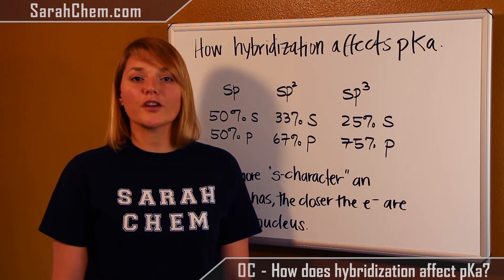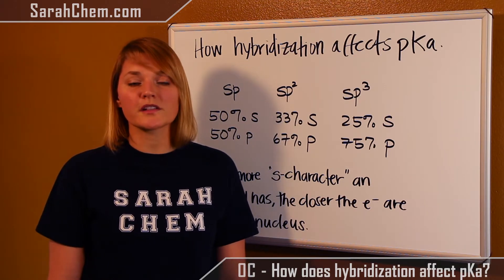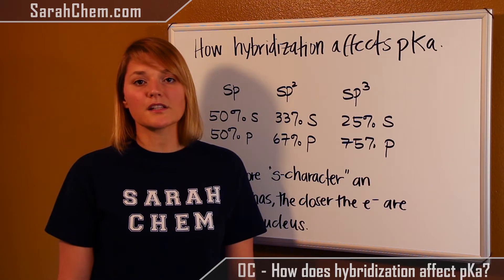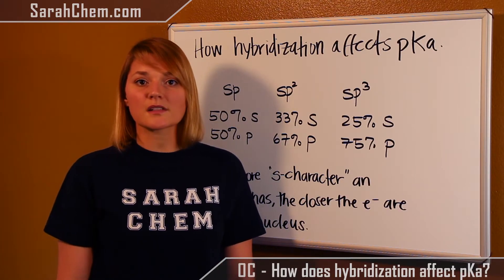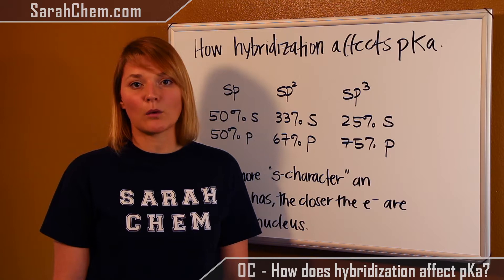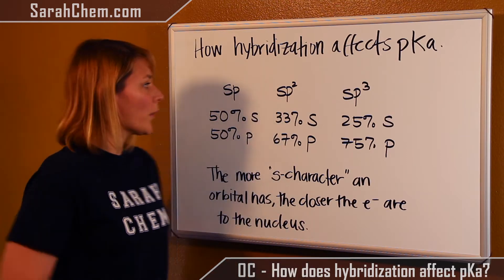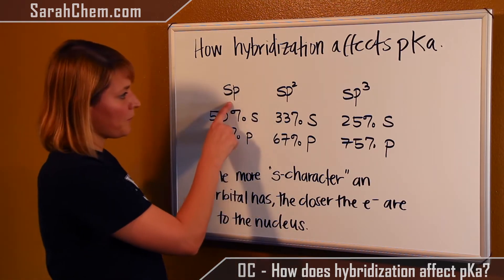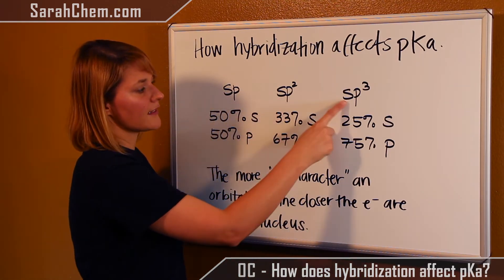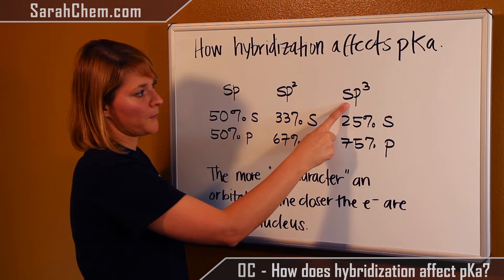The first thing we want to do is talk about sp hybrid orbitals. There are three possibilities for hybrids that we'll see when we mix s and p orbitals: we have an sp, an sp2, and an sp3.